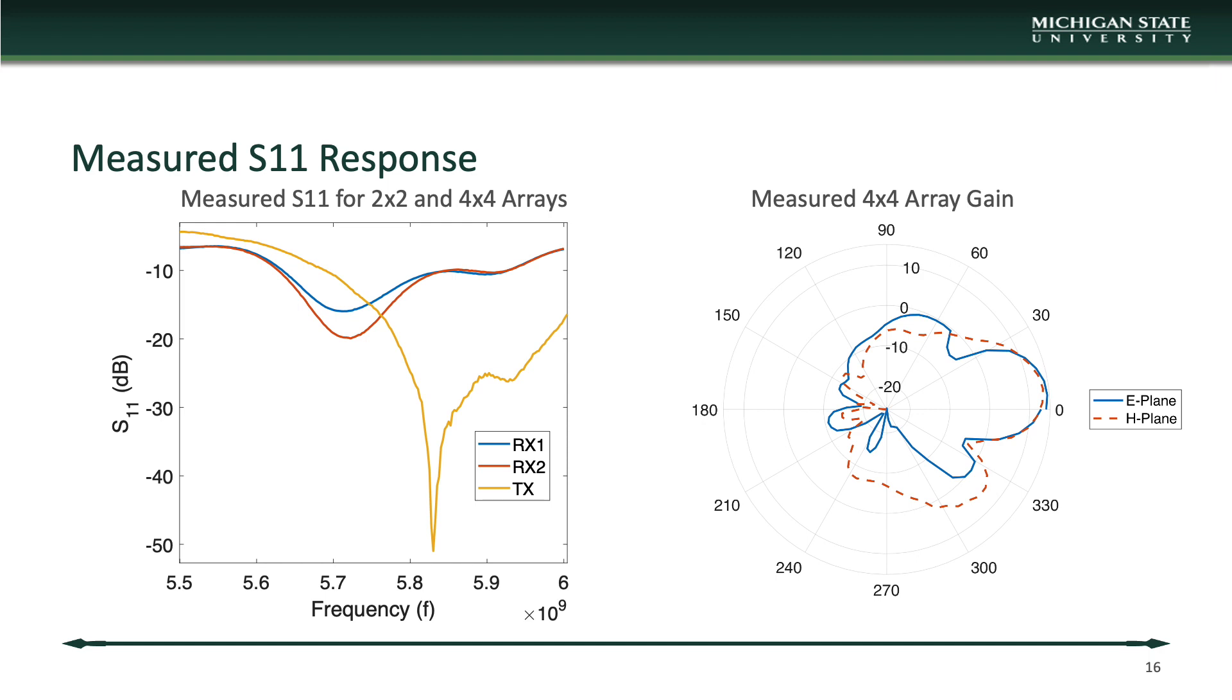Once both the 2x2 and 4x4 array were simulated, they could be manufactured. One thing to consider when these were manufactured was over-etching, as we used an etching process to fabricate the boards. The estimated over-etching of 3% was incorrect, as the final over-etching was estimated to be about 1.5%. Despite this, we can see that our transmitter performed fairly well under these circumstances, with a final S11 at 5.8 GHz of about negative 28 dB, while the receivers showed up at negative 15 and negative 22 dB, respectively.